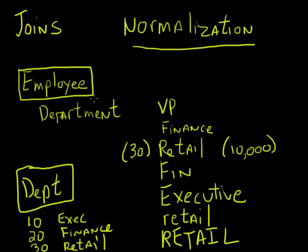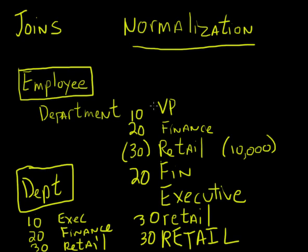But when it comes time to query this information from the employee table and display it on a report, I'm going to see 30s and 20s and 10s. For the person running the report, that might not mean anything - what does 30 mean? So I want to write a query that pulls all the employee information, but instead of displaying the department ID number, I want to join over to the other table and display 'finance' instead of 20. The only way we can do that from two different tables is to write a join.